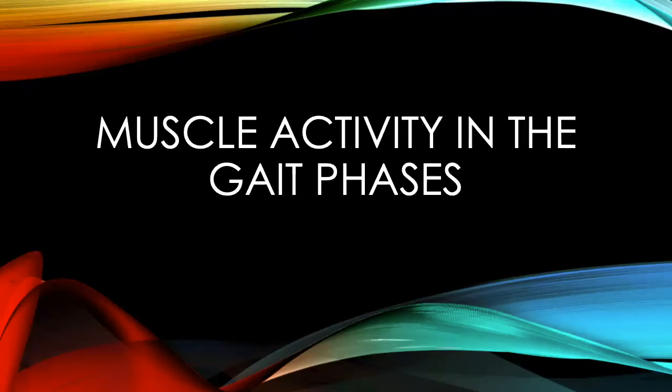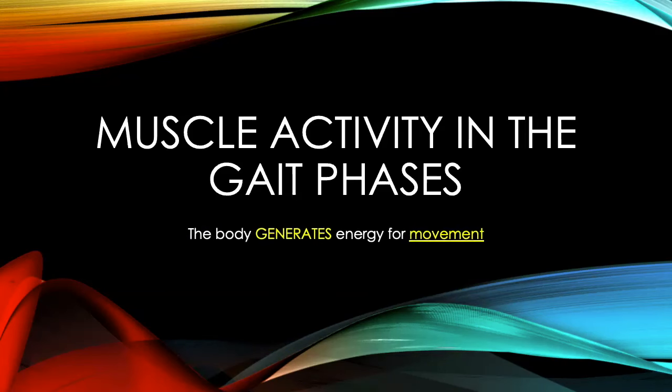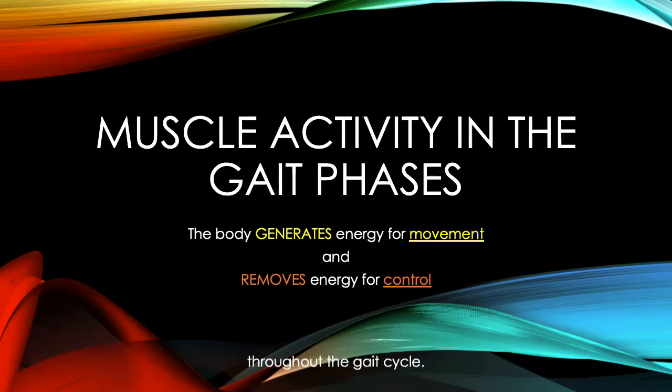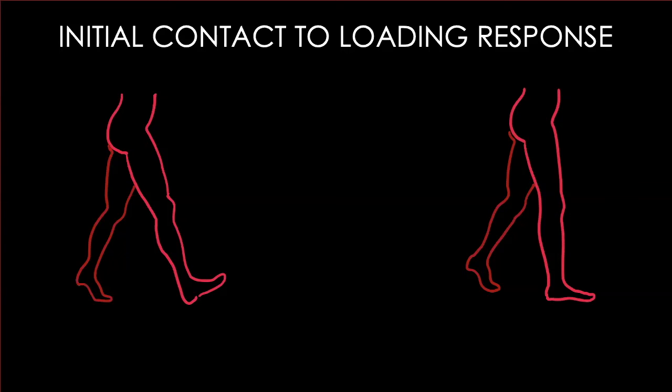Now let's move on to muscles, which are a huge part of the gait cycle. We're going to break it down into two ideas: the body can either generate energy to move a body part, or it needs to remove energy to control movement and progression forward. We'll look at two phases in sequence, since the gait cycle is continuous. We'll also go joint by joint — hip first, knee second, ankle third — to make it more manageable to study.